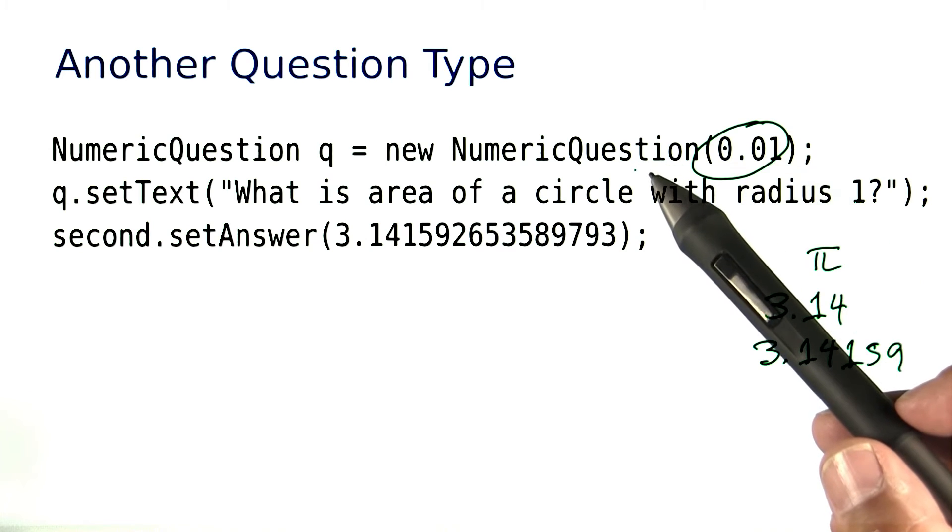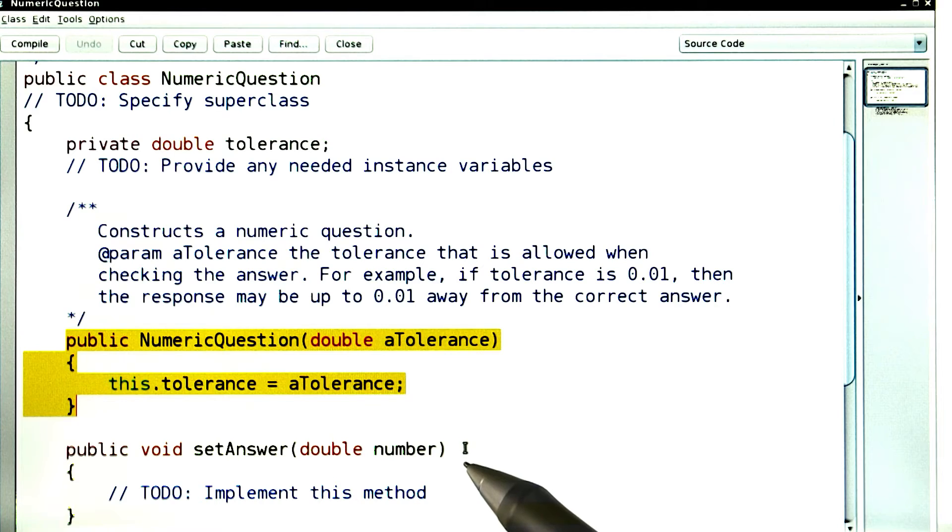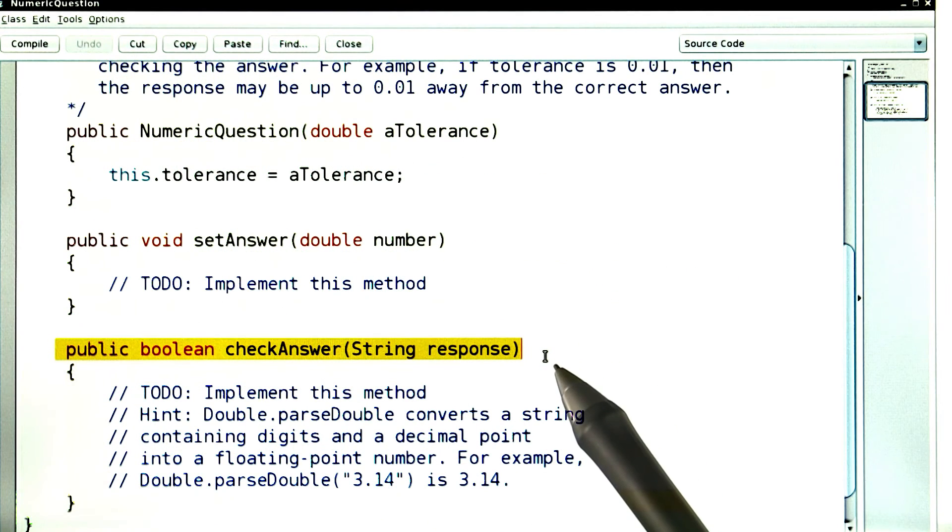Your task is to implement this new question type. We've given you the constructor. Your job is to provide the setAnswer method and the checkAnswer method. In the checkAnswer method, you need to take the tolerance into account. You need to check whether the given number is not too far away from the response.